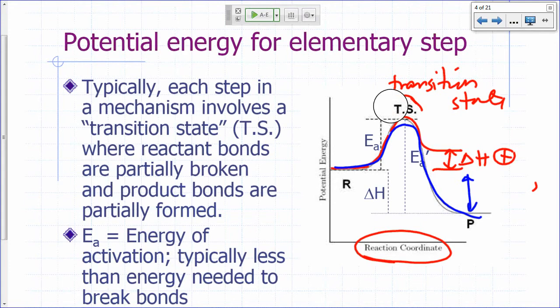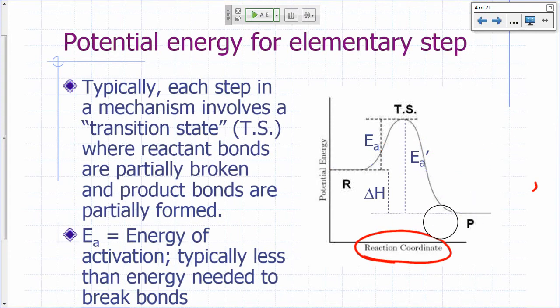So this is what we call the potential energy profile for an elementary step. It goes through maximum, and then it goes back down. So the minimum energy that your reactants need to be able to get to the transition state is called your energy of activation.